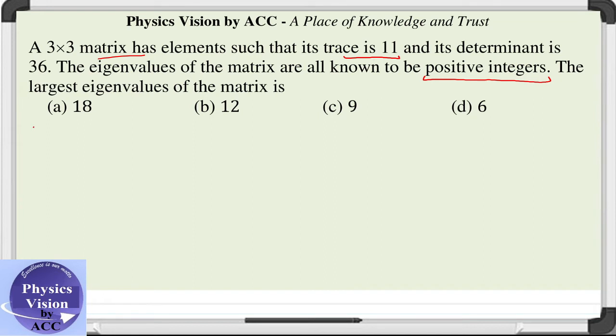So what we will do? We will firstly write down the properties that all the lambdas - lambda i, lambda 1, lambda 2, lambda 3 - are greater than 0, are known to be positive integers.